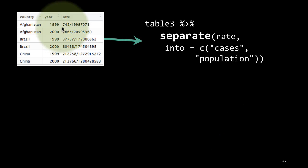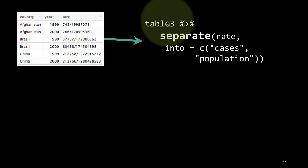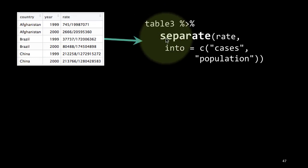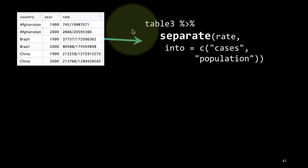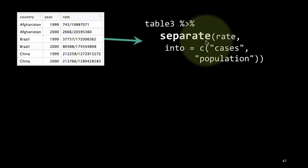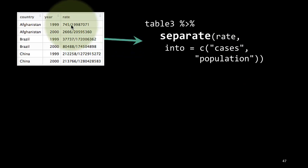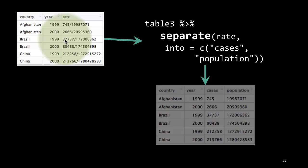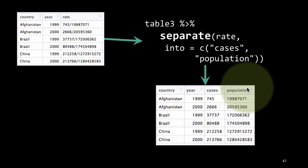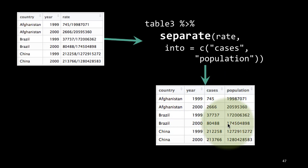What we want to do is separate 745 into one column and 199 million into another column, and that is easily done by using the separate function. We say table3 %>% separate(rate, ...) — take the rate column and separate it into two columns called cases and population. By default it uses any non-alphanumeric character as the separator, so the slash character is automatically used, and you get cases and population separated out.